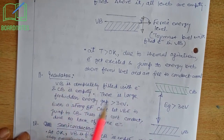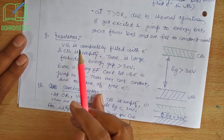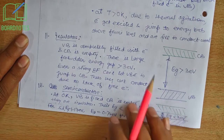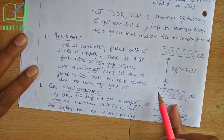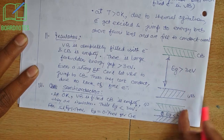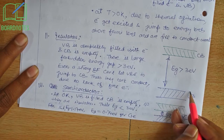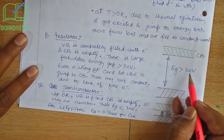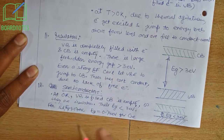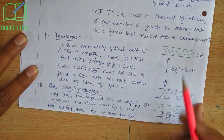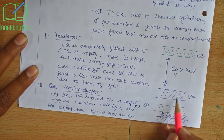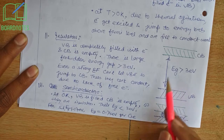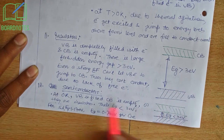Now, coming to insulators. In case of insulators, the valence band is completely filled with electrons whereas the conduction band is empty. The energy gap between the topmost of the valence band and the lowermost level of the conduction band is more than 3 electron volts. Even with a strong electric field, it is not possible for electrons to excite from the valence band to the conduction band. Electrons are bounded to their atoms inside the valence band only. Therefore, insulators cannot conduct due to a lack of free electrons.